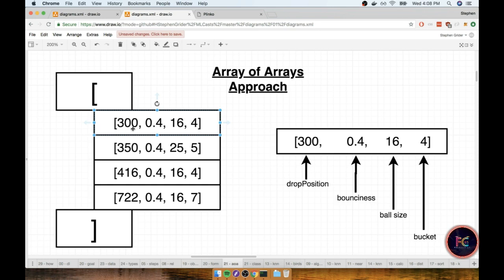Inside this array we record the drop position, the bounciness, the ball size, and the bucket. So in other words the index of every value that is stored inside these inner arrays is very meaningful even though they're not necessarily labeled as such.